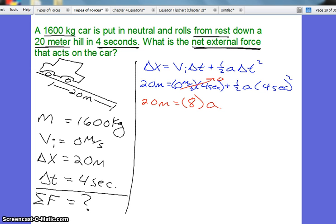And now we divide by each side, 8, and we get our acceleration. It comes out to be 2 and a half meters per second squared.